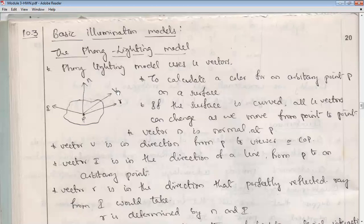When light falls on the surface, based on the material property, either it may look very dull or very smooth and shiny. Based on the angle of incidence and angle of reflection — if the surface is smooth, we get shininess; if the surface is rough, we get a dull surface. The viewer can observe what type of behavior is exhibited on point P. In the Phong lighting model, we use four vectors: the illumination vector I (where light comes from), the normal vector N, the viewer vector V, and the reflection vector R.